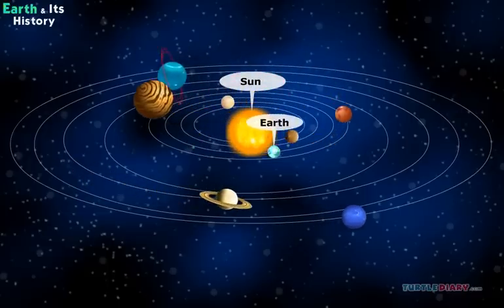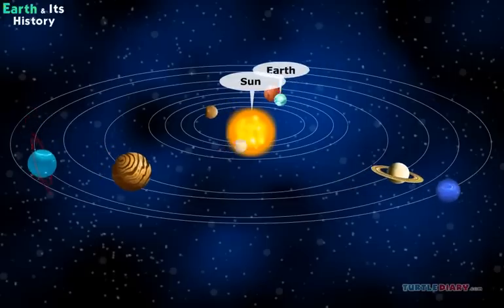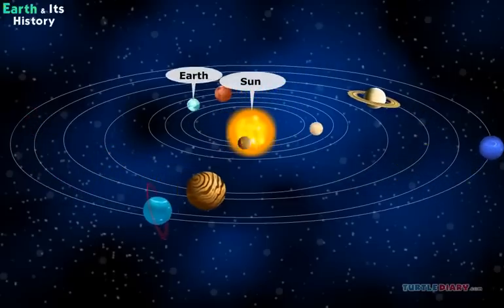Earth orbits or goes around the sun. The other planets orbit the sun, too.